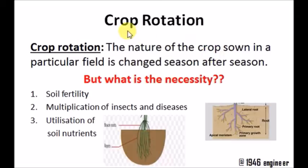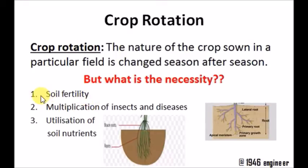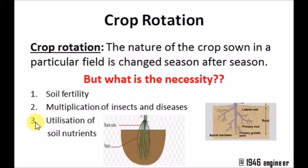What is the necessity of crop rotation? Why do we have to follow this practice? Because if we keep on utilizing the same crop in a particular field, three things get affected: the fertility of the soil gets reduced, the crops become vulnerable to insects and diseases, and we cannot completely utilize the soil nutrients.